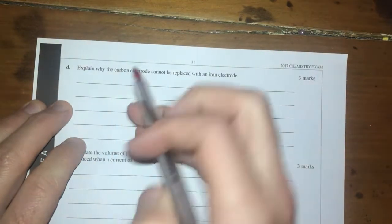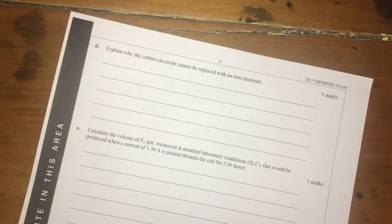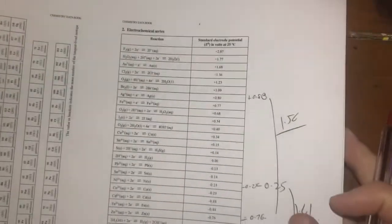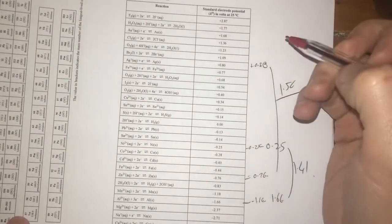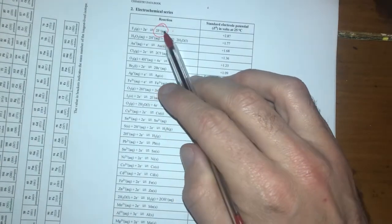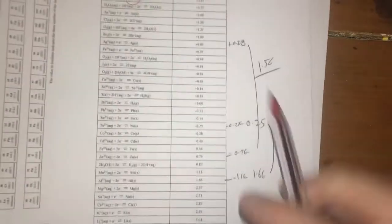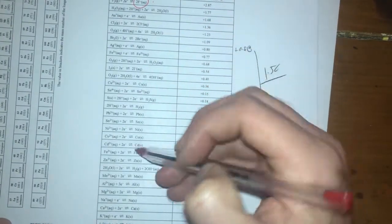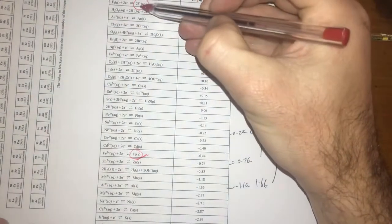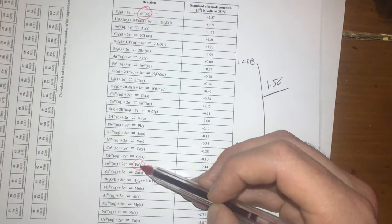So there we go, explain why the carbon electrode cannot be replaced with an iron electrode. All right so what I'm going to do here I'm going to look at my electrochemical series because anytime I'm going to change something in my cell I look at what's happening in my electrochemical series. Currently I've got F- as my strongest reductant. If I then let's work out where the carbon electrode actually is. Carbon electrode is here which is my anode. So what that's going to do is I'm going to add in iron solid which is down here.